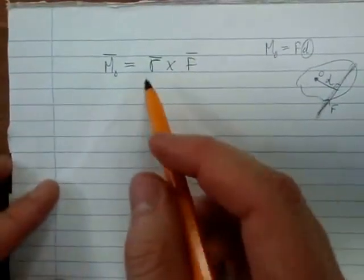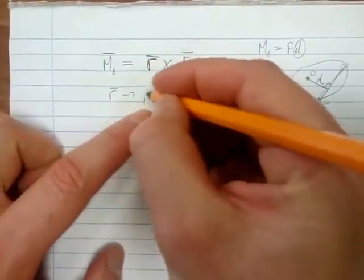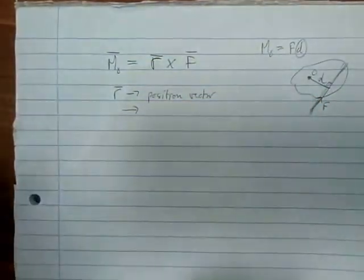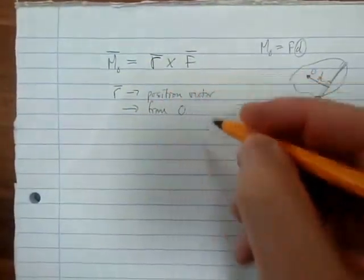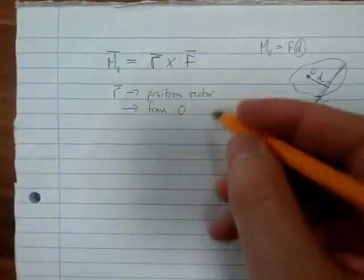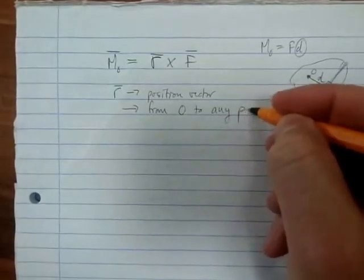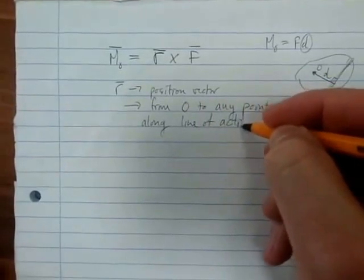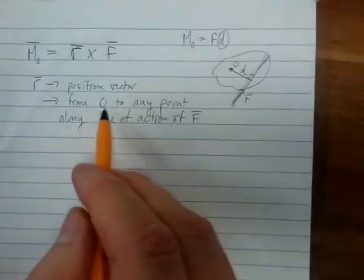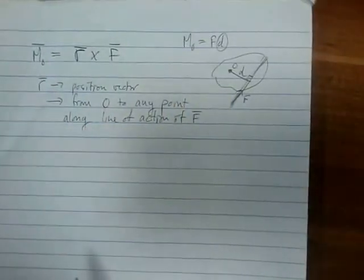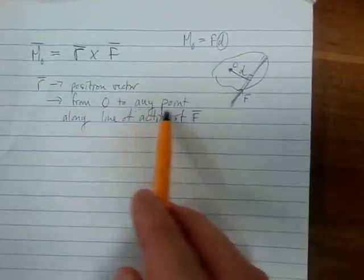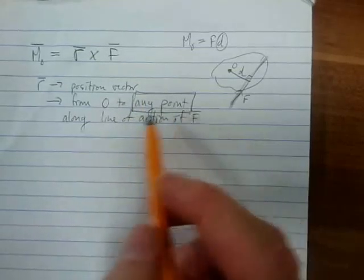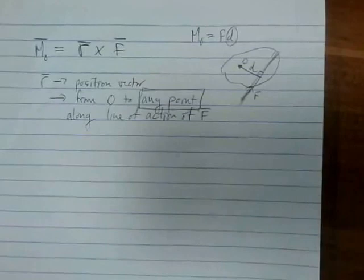In vector formulation, r is a position vector from O to any point along the line of action of force F. Please remember this: from O to any point along the line of action of F — any point.